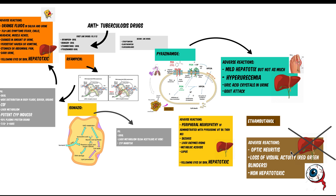To summarise: rifampicin — think orange fluids, hepatotoxic. Isoniazid — peripheral neuropathy and hepatotoxic. Pyrazinamide — think hyperuricemia and uric acid crystals, still hepatotoxic but less so. Ethambutol — not hepatotoxic, but causes optic neuritis and loss of vision.